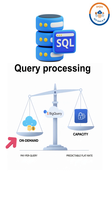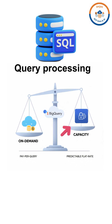The second model is capacity pricing, also known as slots. This is great for predictable high-volume teams. You purchase dedicated compute power upfront, measured in slot hours, and get a fixed monthly bill, making your costs much easier to forecast.